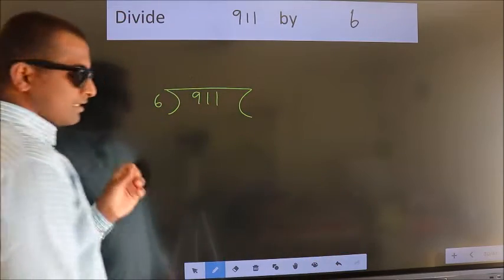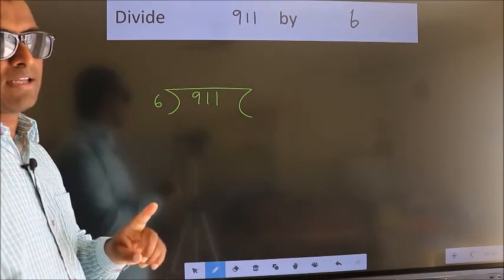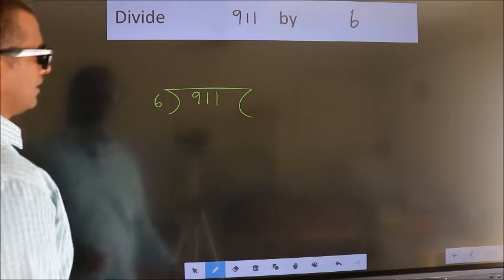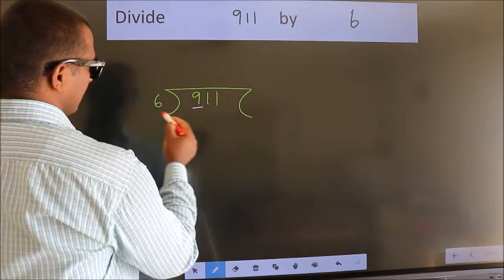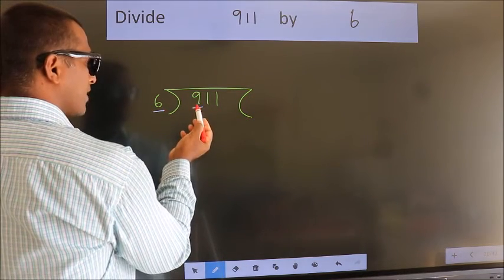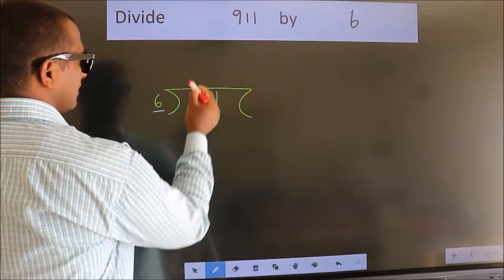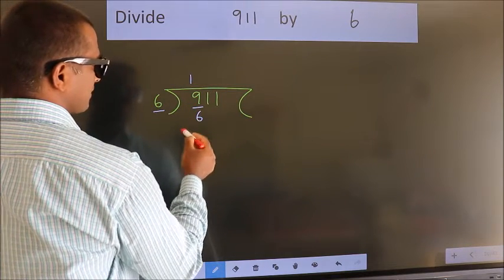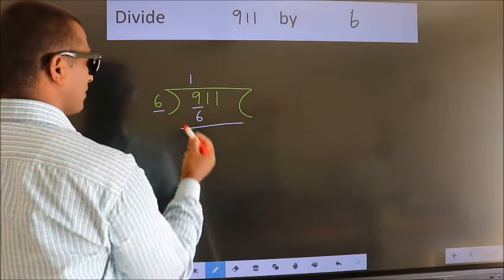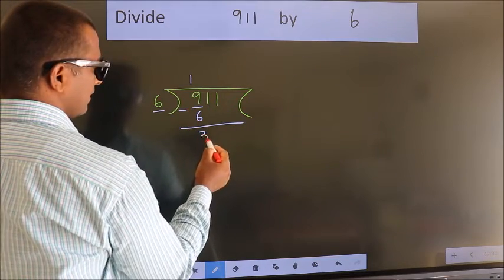This is step 1. Next, here we have 9, here 6. A number close to 9 in the 6 table is 6 times 1 equals 6. Now we should subtract. We get 3.